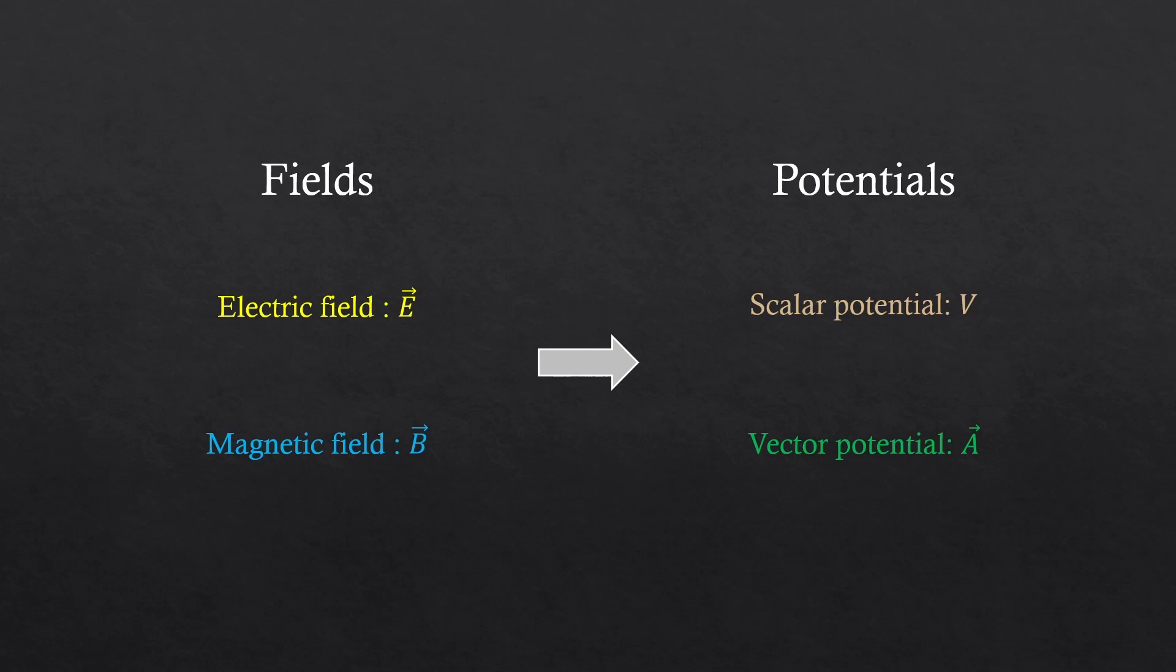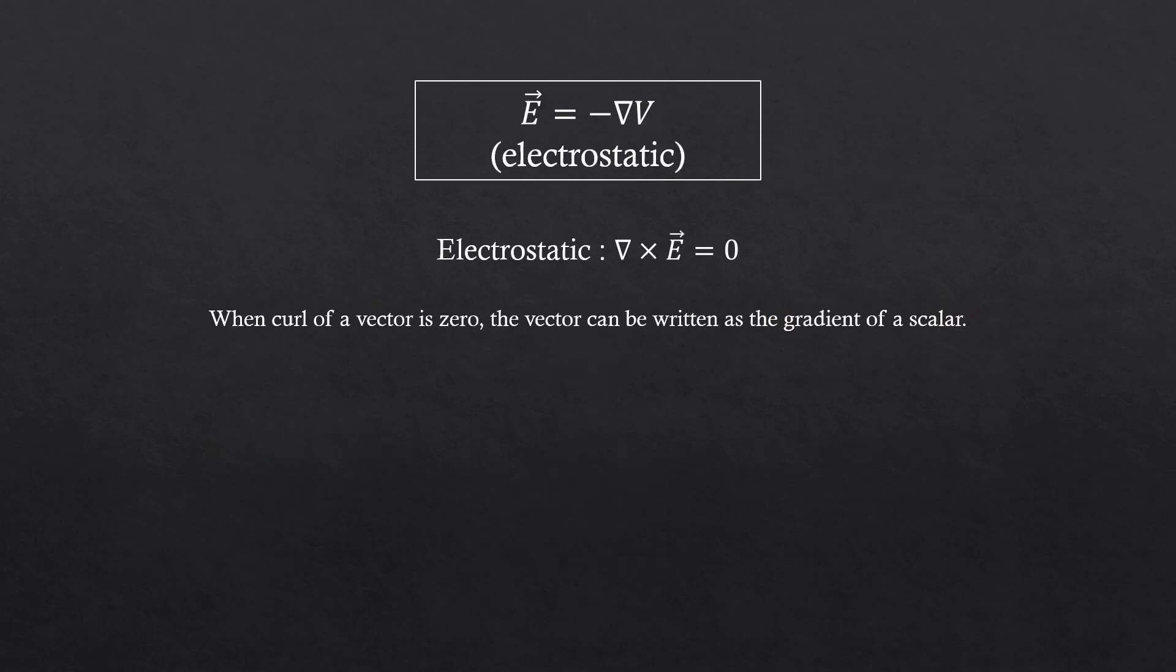To do this, we'll have to bring some past definitions. The relationship between electric field and the scalar potential from electrostatic, and the relationship between the magnetic field and the vector potential from magnetostatic. Let's review those definitions.